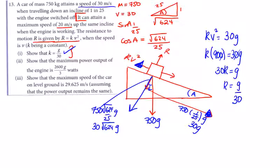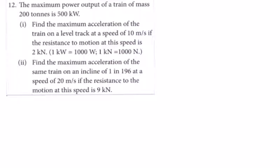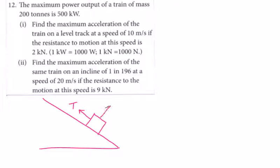Now we're asked to show the max power output is 2600g/3. Drawing a diagram with the car going up the hill: tractive effort T drives the car up, normal reaction acts perpendicular to the slope, and resistance kv² opposes motion. The weight components remain the same — 750g straight down, with components along and perpendicular to the slope.